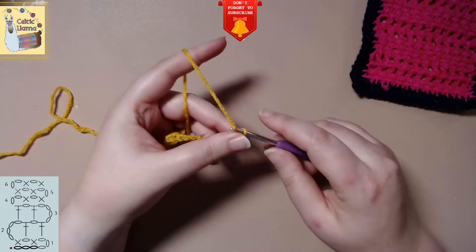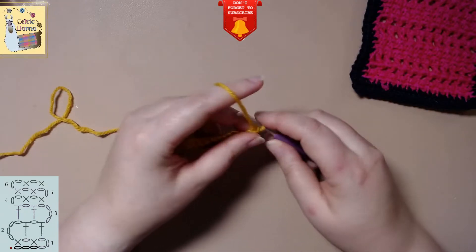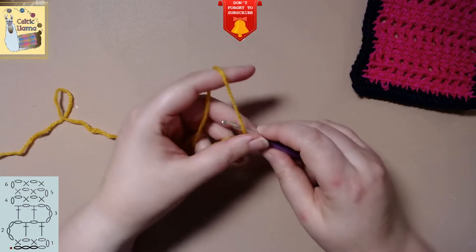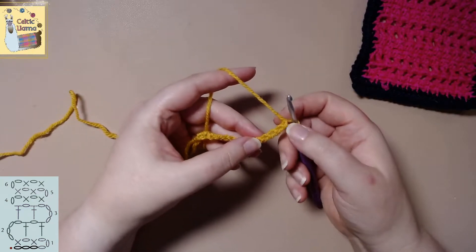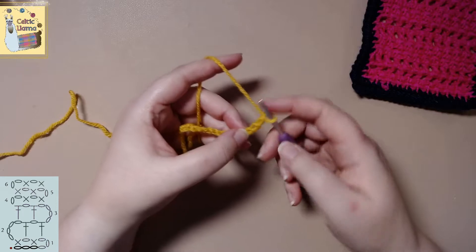So here we are with our eleven chains. We want to chain three and in the fourth chain from the hook we want a single crochet.